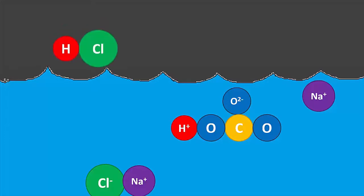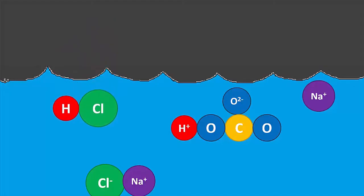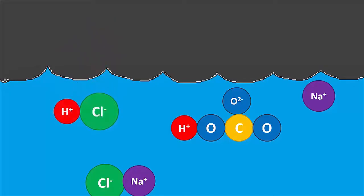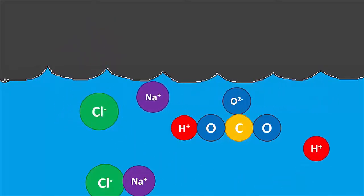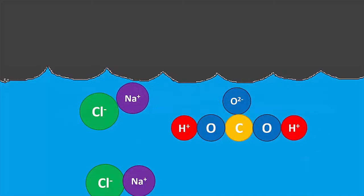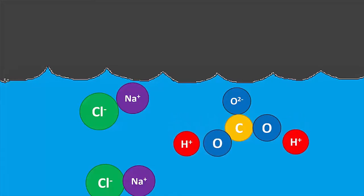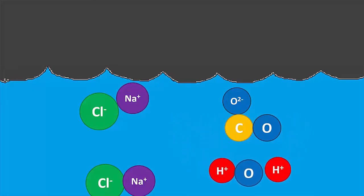If we have another HCl put into water, it too will dissociate, and the sodium and chlorine will now have partners, and the other H will come over to form carbonic acid. That carbonic acid will quickly decompose into water and carbon dioxide.